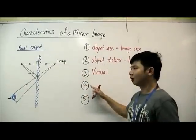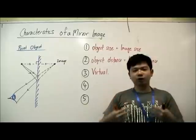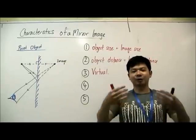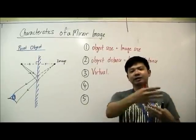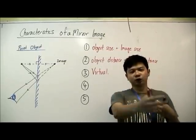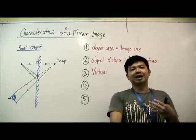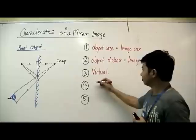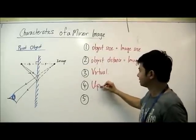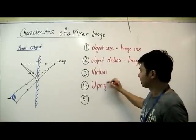Number four. When we stand and look at ourselves in the mirror while standing upright, the image will also stand upright. So the fourth characteristic is upright.